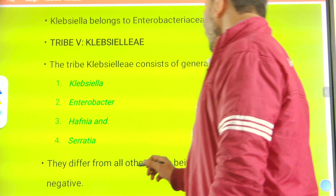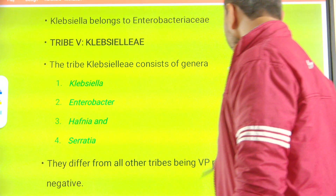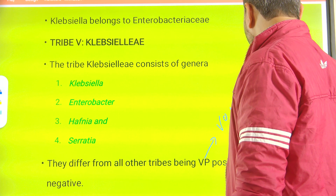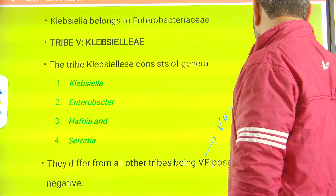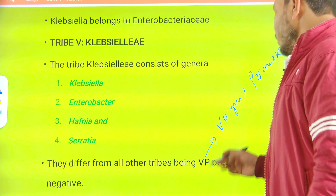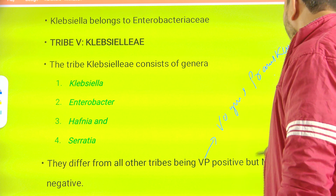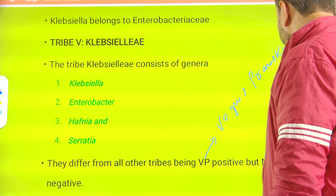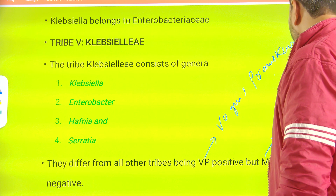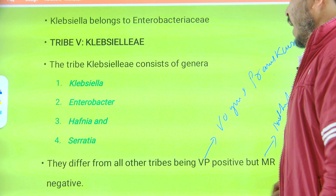All four genera differ from other tribes by being VP positive. VP stands for Voges-Proskauer test, in which based on color the end product determines if organisms are Voges-Proskauer positive or negative. The other test is MR, Methyl Red. They all differ by being VP positive but MR negative.